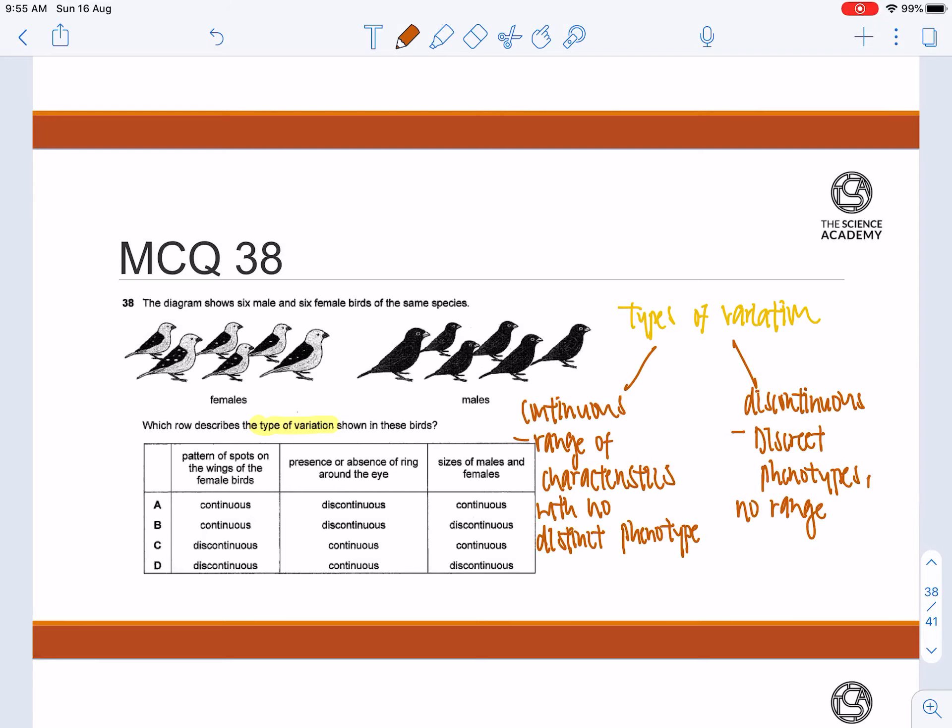So essentially for continuous variation, there are things like height. And for discontinuous variation, there is eye color. There is also hair color, etc. Let's move on to the question itself.